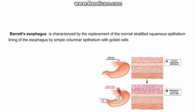So what is Barrett's esophagus? The normal esophagus is lined by stratified squamous epithelium, whereas in Barrett's esophagus this stratified squamous epithelium is replaced by a columnar epithelium containing goblet cells. This change of epithelium is named as metaplasia. So Barrett's esophagus is actually intestinal metaplasia of the esophageal lining epithelium.